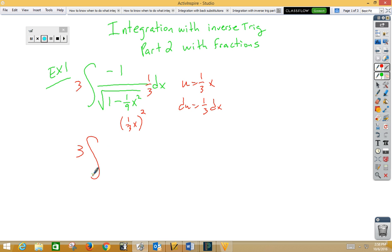I now have 3 integral negative 1 over root 1 minus u squared du. That's arc cosine, so we get 3 inverse cosine, one-third x, plus c.